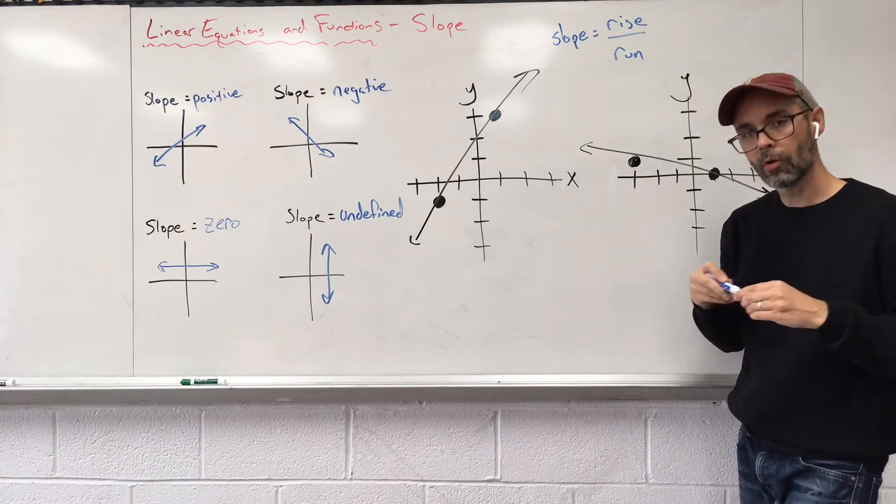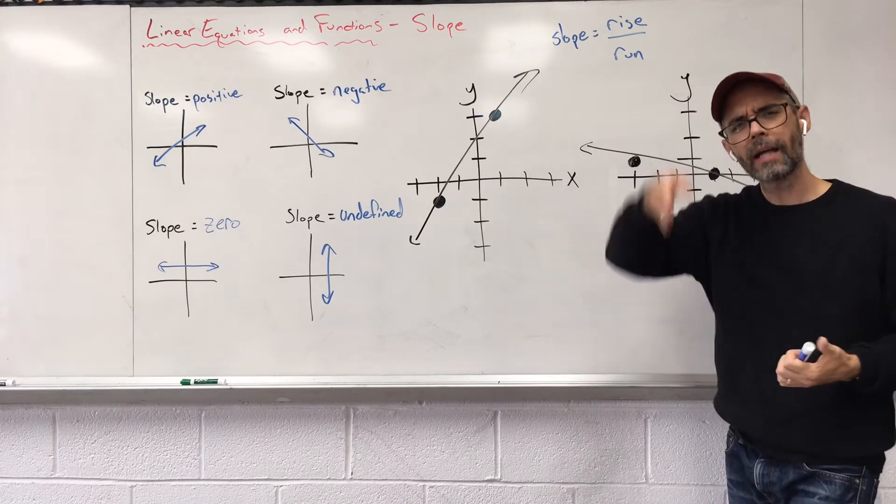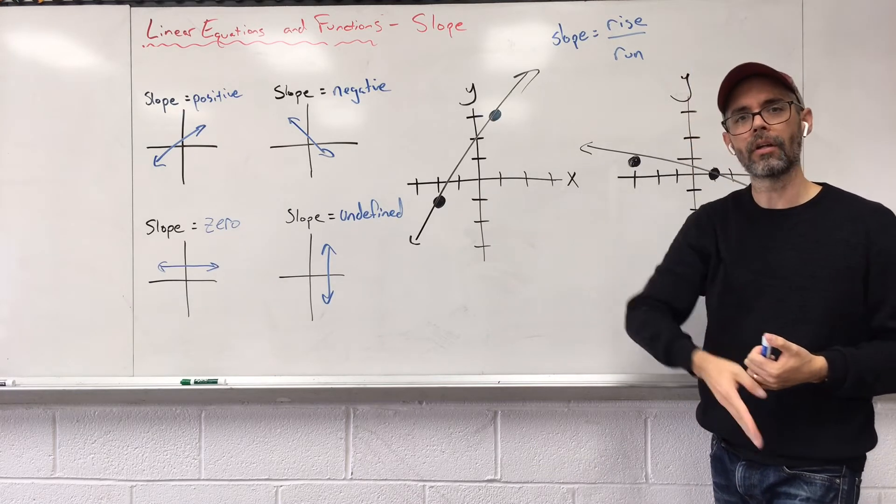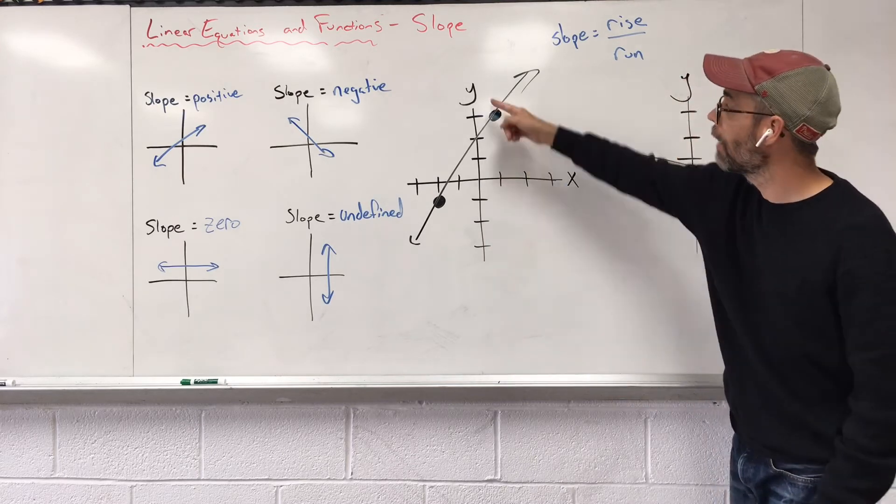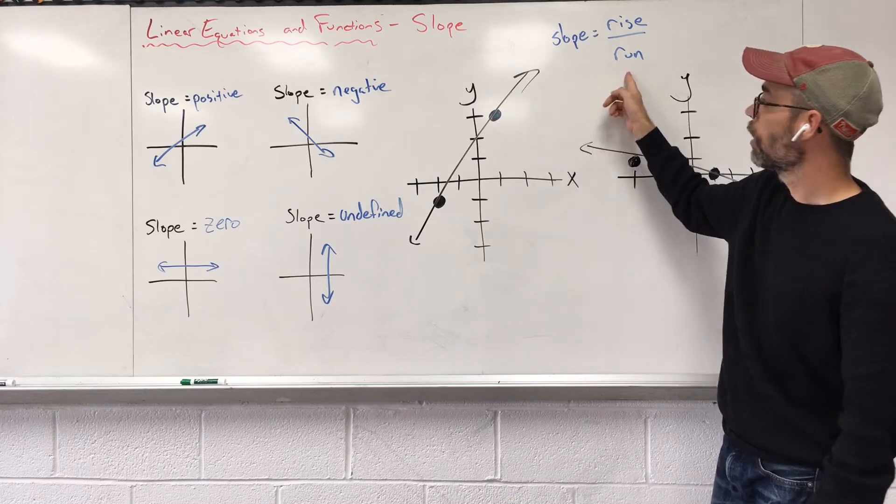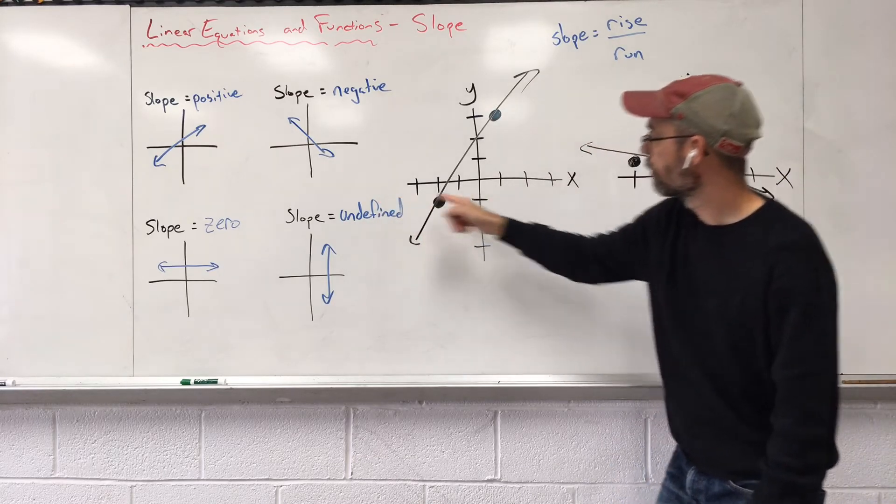Sometimes we can say slope is equivalent to the rise over run. What does rise mean? Rise just means going up and down. What coordinate goes up and down? The y half, up and down. The run says going left and right. The x goes left and right.